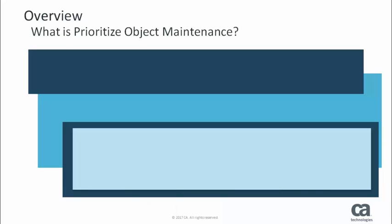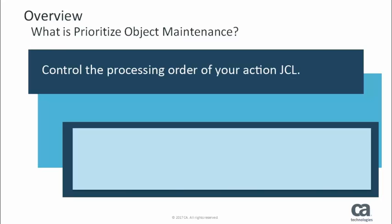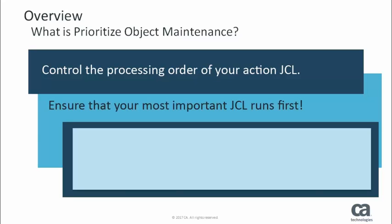Today we're going to talk about two important components of the Prioritize Object Maintenance feature: Prioritize Object Conditions and Object Sets. But first, let's take a look at the big picture. Prioritize Object Maintenance is a feature that lets you control the processing order of your Action JCL. As a result, you can ensure that your most important JCL runs first.